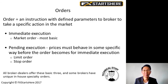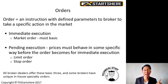Types of orders. So what are orders? Orders are an instruction with defined parameters to a broker to take a specific action in the market. The immediate execution — which is a market order — is the most basic form. A market order means you click on the buy or the sell and you're in the trade. Next we have the pending execution, where prices must behave in some specific way before the order becomes an immediate execution.